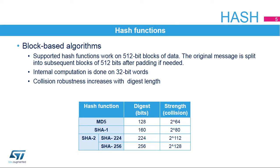All supported hash functions work on 512-bit blocks of data. The input message is split as many times as needed to feed the hash processor, and subsequent blocks are computed sequentially. MD5 is the less-robust version with only a 128-bit digest. The SHA standard has two versions: SHA-1 and the more recent SHA-2, with its 224 and 256-bit digest-length versions.